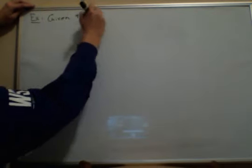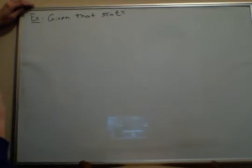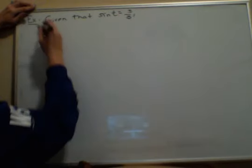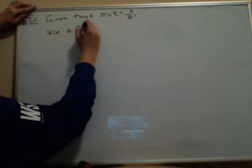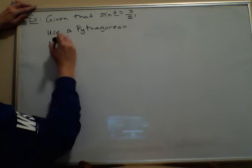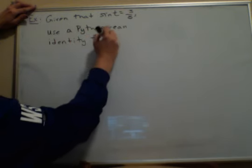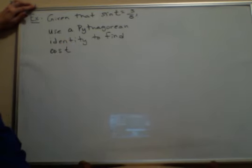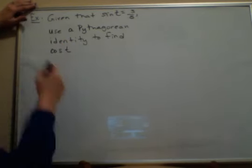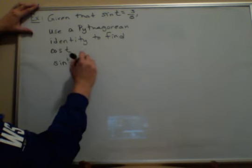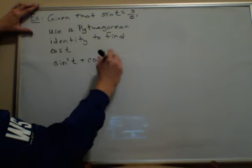The last example we're going to do, I'm going to say, given that the sine of an angle is, let's use three-fifths, use a Pythagorean identity to find cosine of t. Well, here's what I know. The Pythagorean identity that relates sine and cosine says that sine squared plus cosine squared is equal to one.